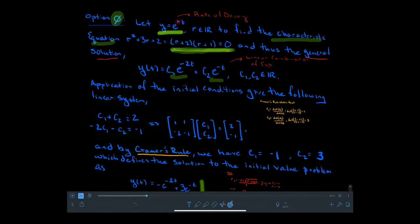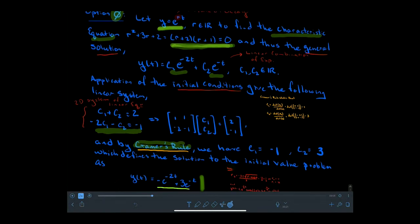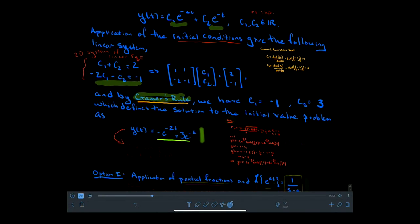For second-order problems, there are two exponential functions, and their linear combination forms the general solution, where the constants multiplying the basis elements are arbitrary real numbers. If we have initial conditions, we can solve for those constants. What it boils down to is a two-dimensional system of linear equations that needs to be solved — we can apply techniques from linear algebra, such as Cramer's rule, though standard algebraic techniques from high school also work. After finding those coefficients, we find the unique solution to the initial value problem.